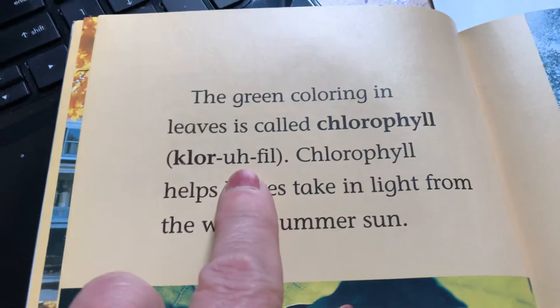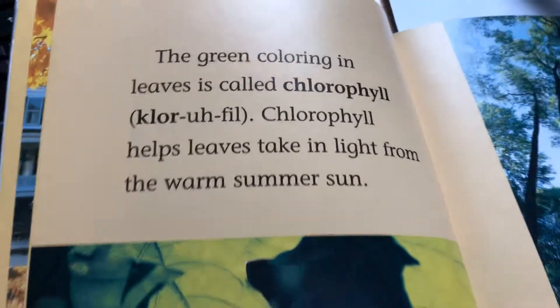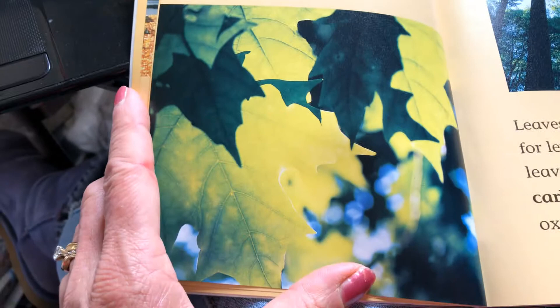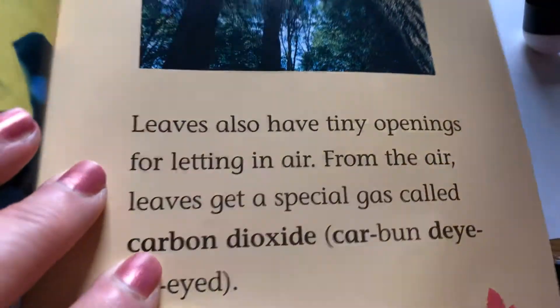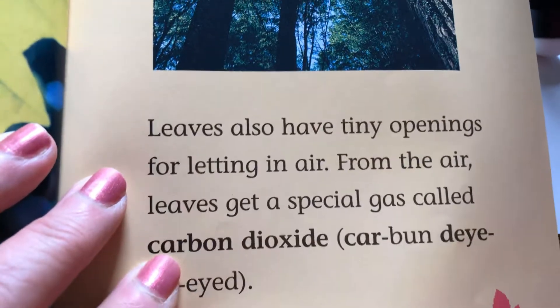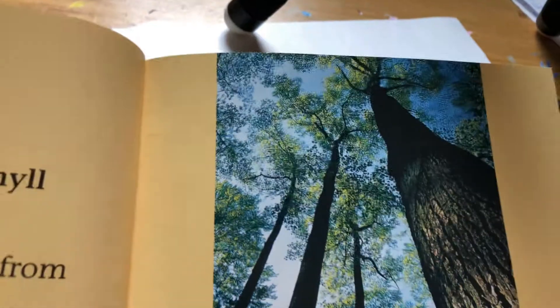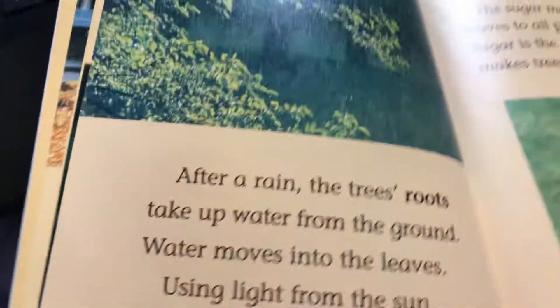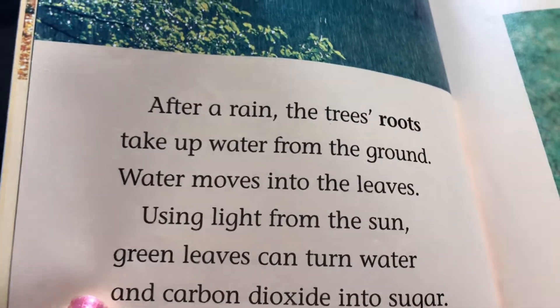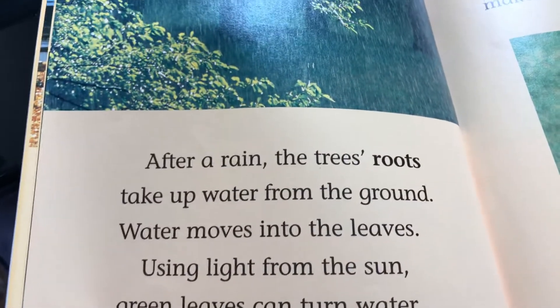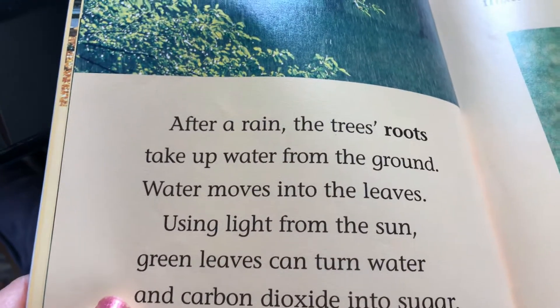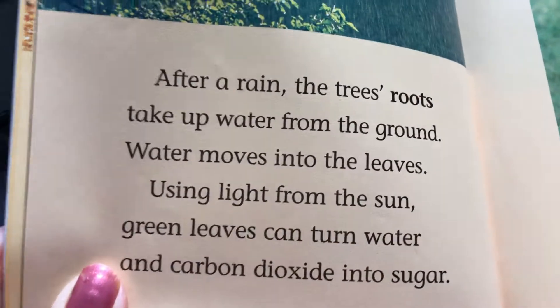The green coloring in the leaves is called chlorophyll. Chlorophyll helps the leaves take in light from the warm summer sun. Leaves also have tiny openings for letting air in — from the air, leaves get a special gas called carbon dioxide. So they take in air, they take in light, and they make food. After a rain, the tree's roots take up water from the ground and water moves into the leaves.